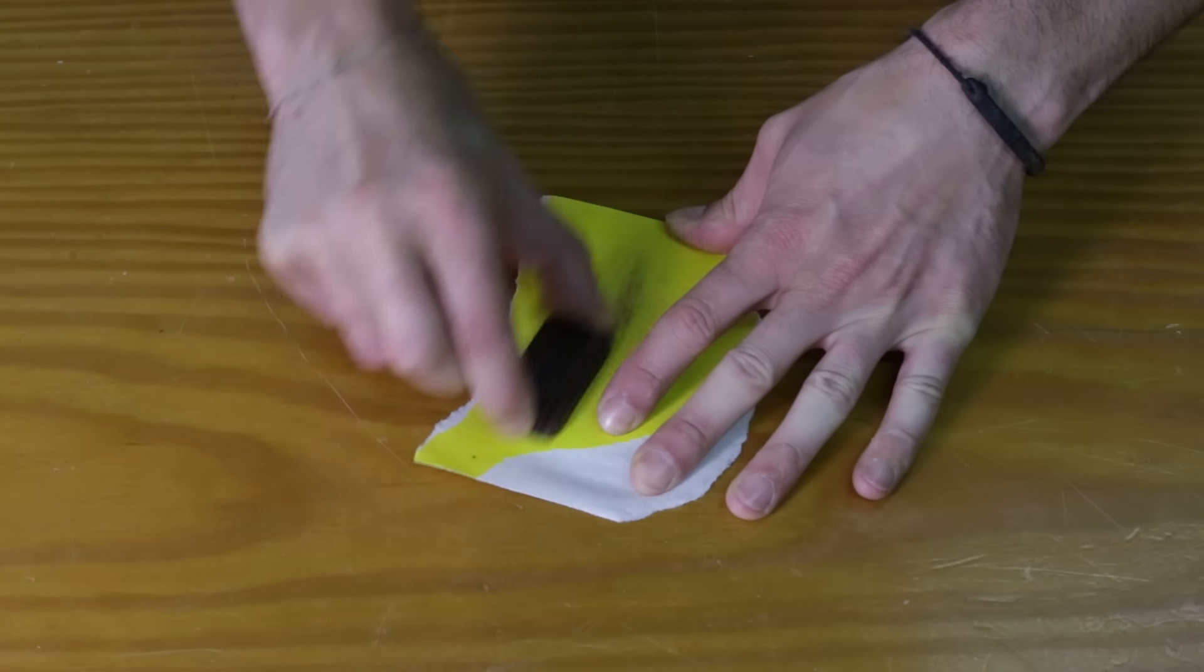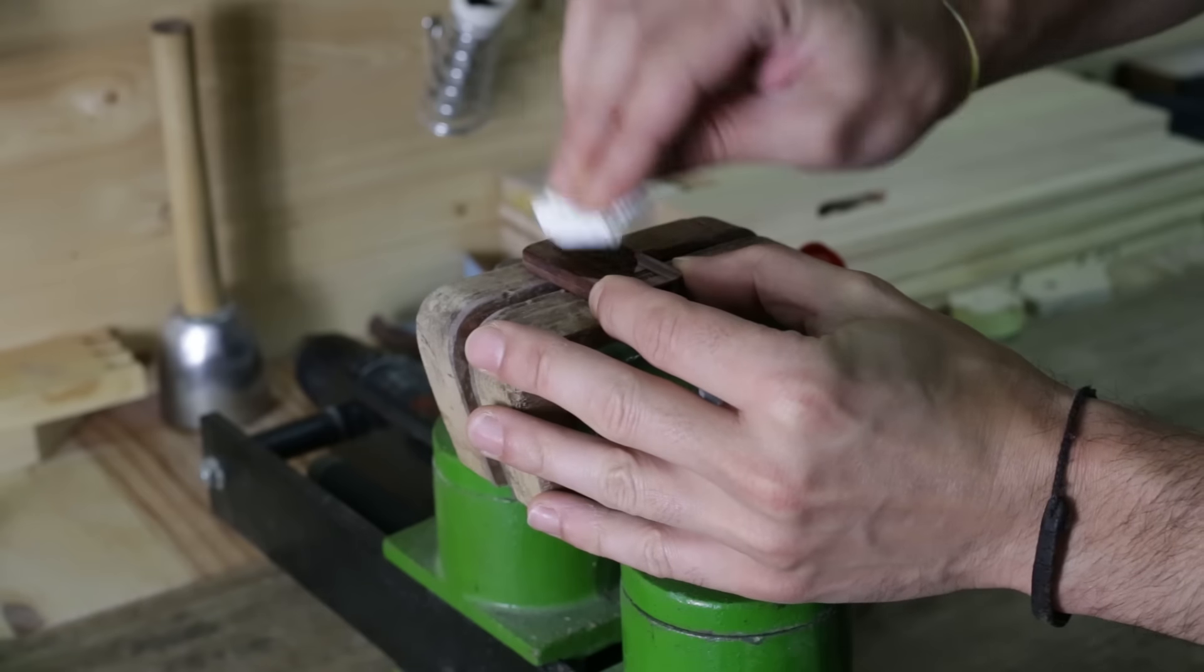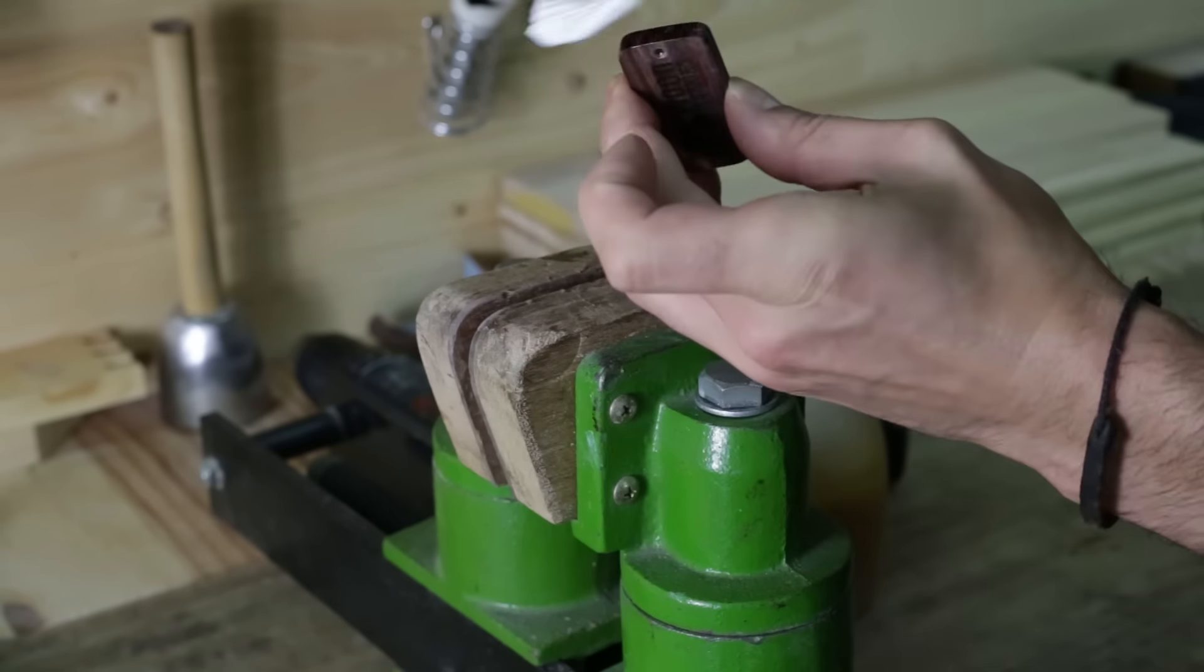We'll sand the piece to give it the finishing touch, and then we apply some oil, which is a mixture of tongue, linseed and carnauba wax. If there is enough interest, I can show you how to prepare the mix in a different video.